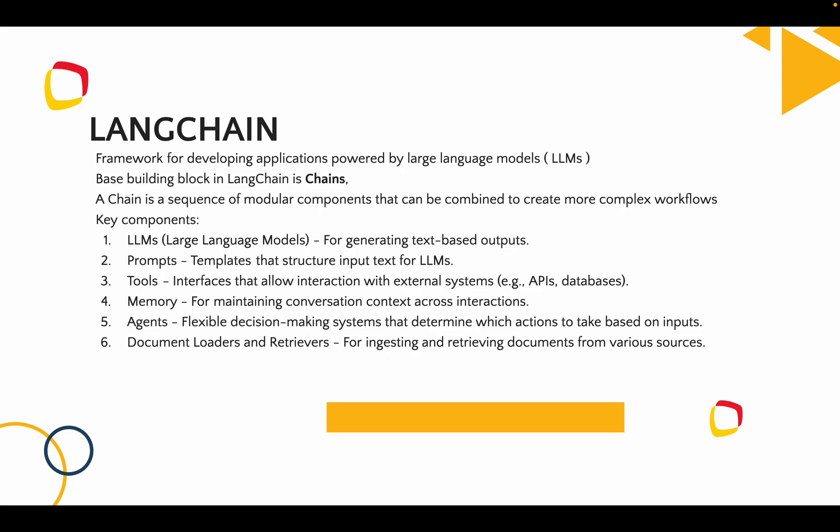A chain has an input component, an LLM component, and an output component. These chains help link all those components together so they work together. When we pass an input, it passes the prompt to the LLM component; the output from the LLM is then passed through the output component, and finally a formatted output is given to the user. That is how a chain works.